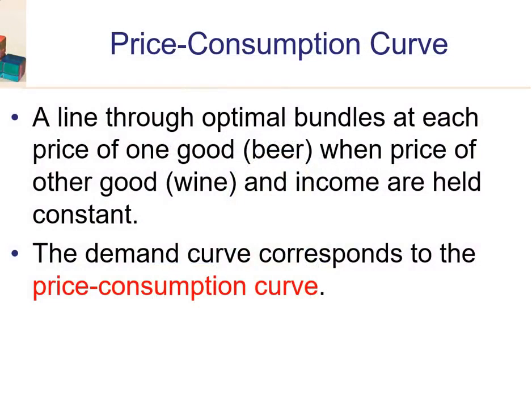A price consumption curve — what is it? It's a line through the optimal bundles as you change the price of one good, in this case beer, while you keep the price of the other good, in this case wine, and income held constant. This demand curve corresponds to the price consumption curve.